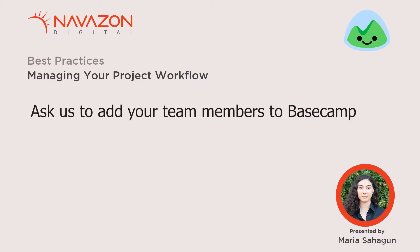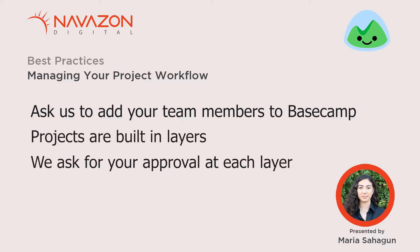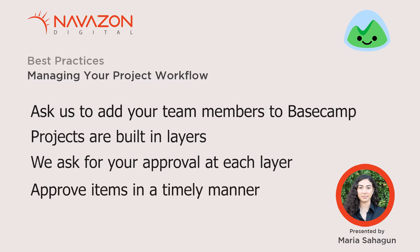Projects can move very quickly and they are usually built in layers. We ask for your approval or opinion on creatives before we move to the next layer or task. For instance, we may ask you to approve a logo before we finalize your color palette and brand board, then we start building your website using those colors and logos. It's important to approve the logo when we first ask for the approval. Asking for changes later in the project will require us to go back and redo a lot of tasks, which can delay the project and increase your costs.